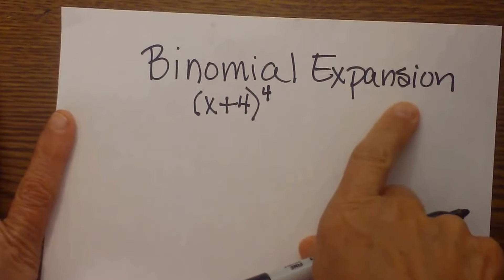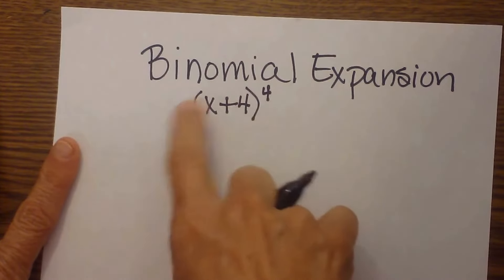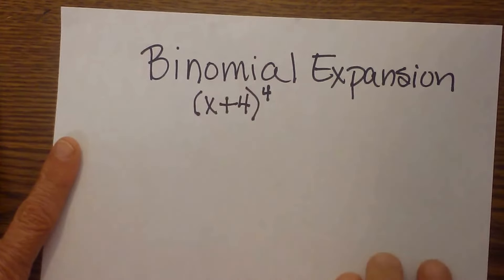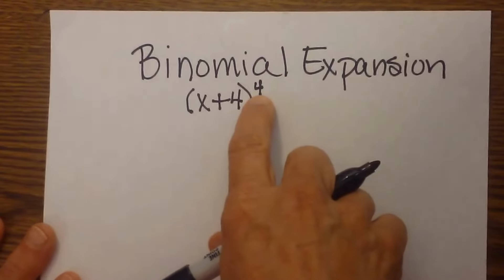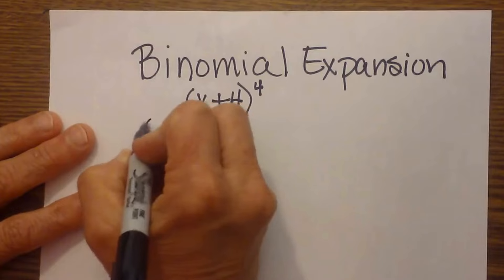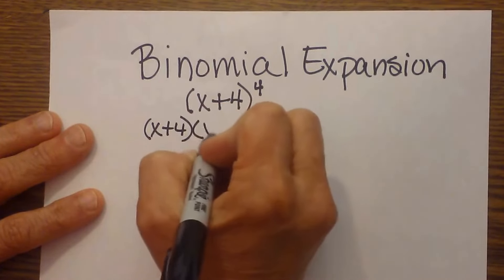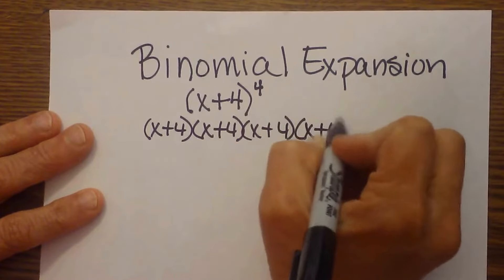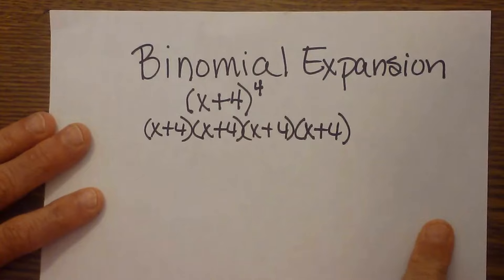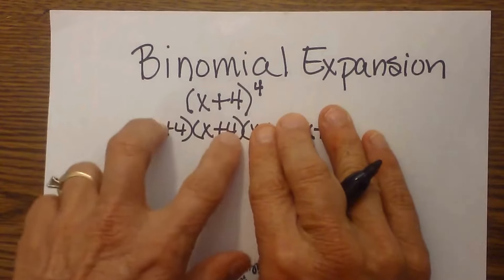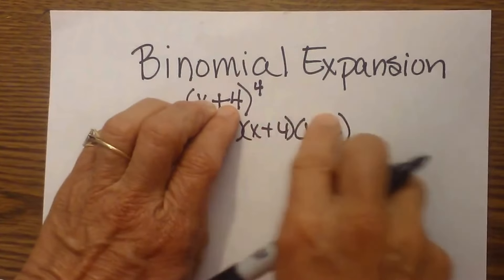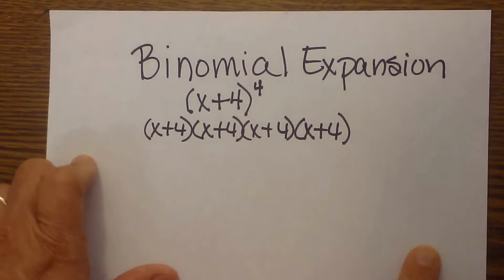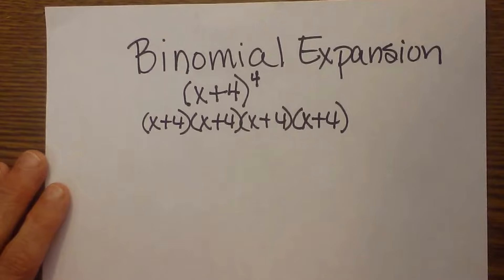Today I talk about binomial expansion. If I have a binomial like x plus 4, raised to the fourth power, I have different ways I can expand that. The first thing we're going to do is look at what it means to raise a binomial to the fourth power — it means I have four of these terms multiplied together. I can use FOIL, multiplying the first two together and the next two together, then multiplying the resulting trinomials. But there's actually another way to do it.